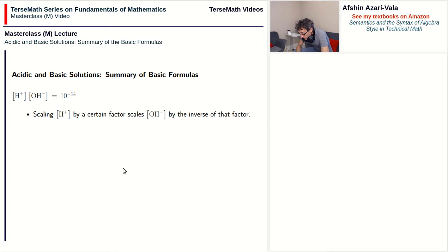What it tells us is that if you scale the concentration of H+ by a certain factor, you end up scaling the concentration of OH- by the inverse of that factor. So if the concentration of H+ gets multiplied by 5, then the concentration of OH- gets divided by 5. And if the concentration of H+ gets divided by 3, then the concentration of OH- gets multiplied by 3.